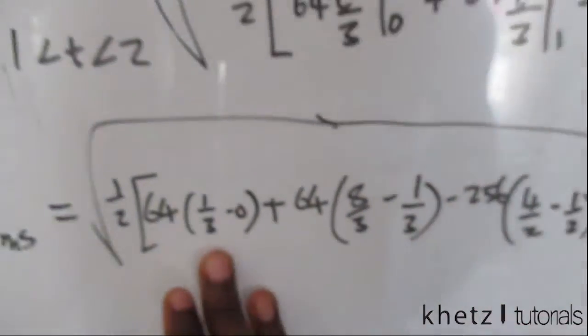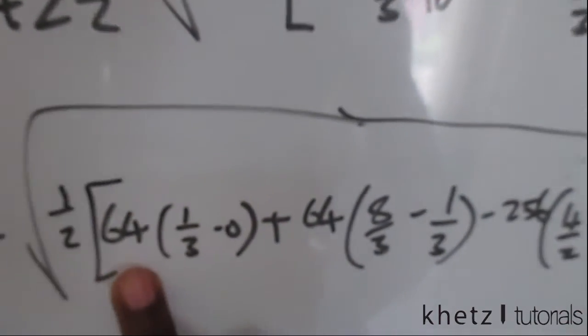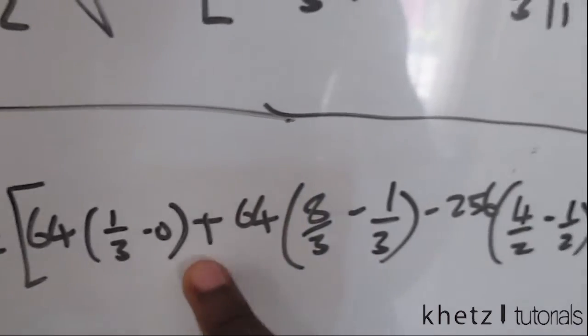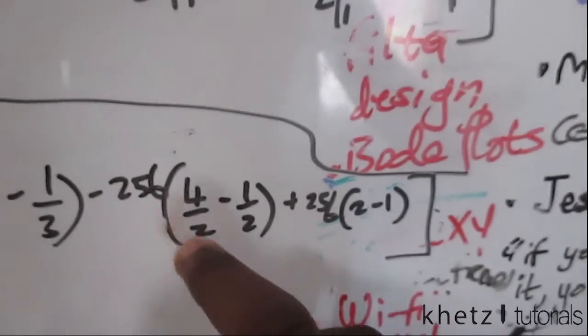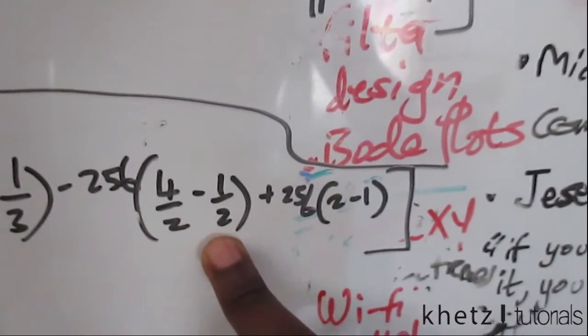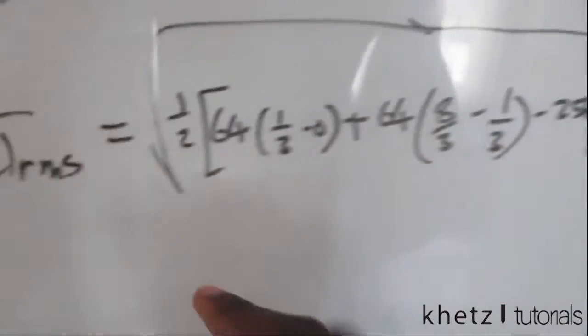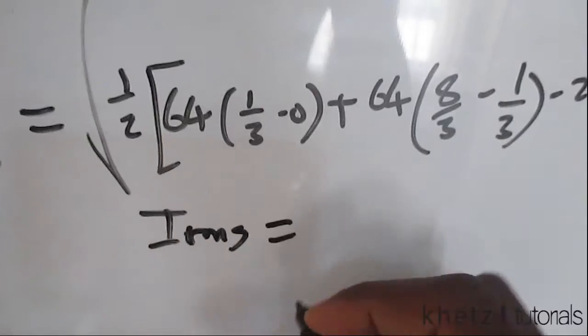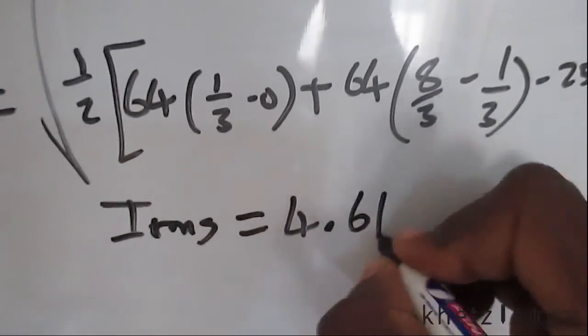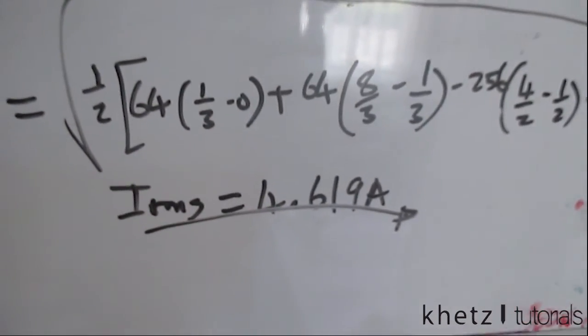You're just basically going to compute all of this, so just basically put half multiply by 64 multiply by that, plus 64. This is basically 7 over 3, 256, and then here you have 2 subtract that, which is 1 and a half. Then here you have 1. After computing that, you should get your IRMS as 4.619 amperes.